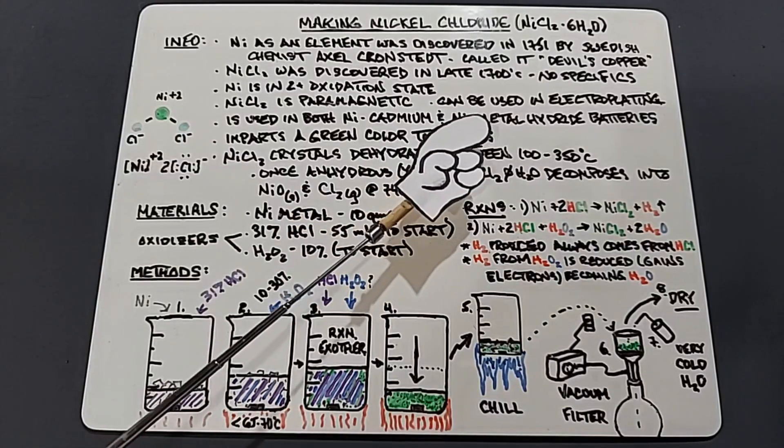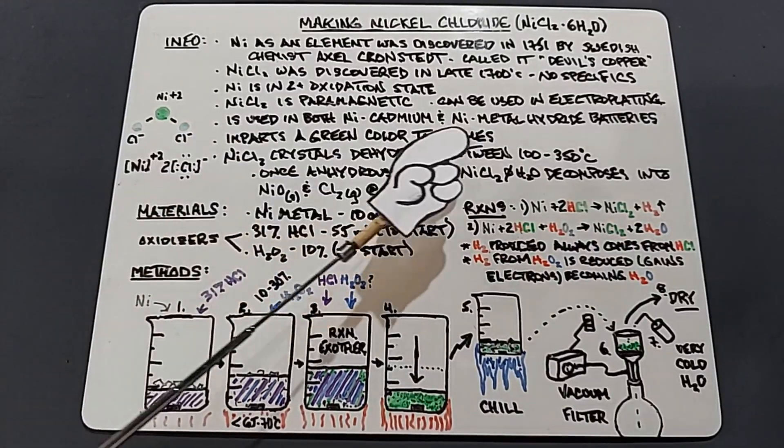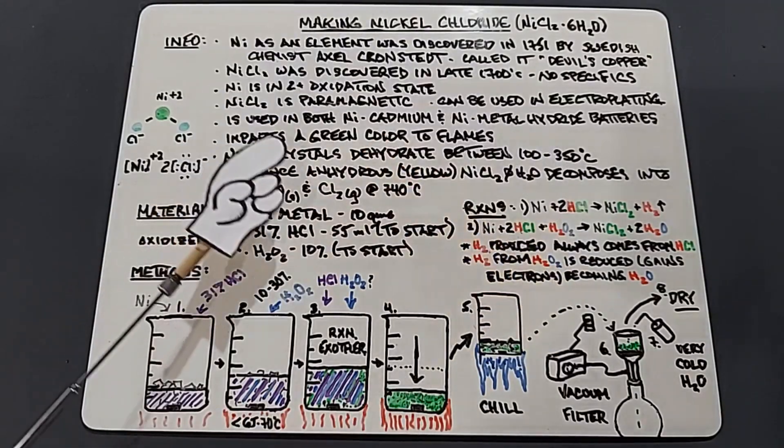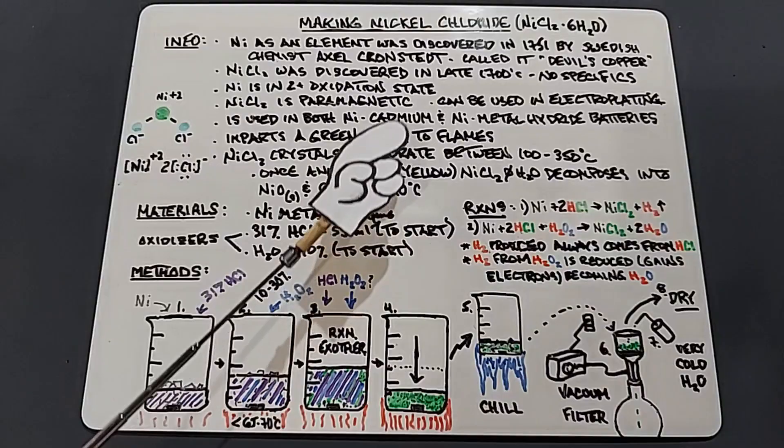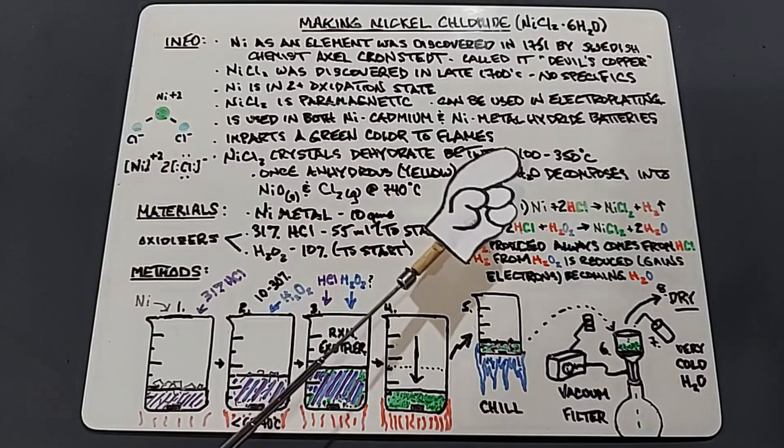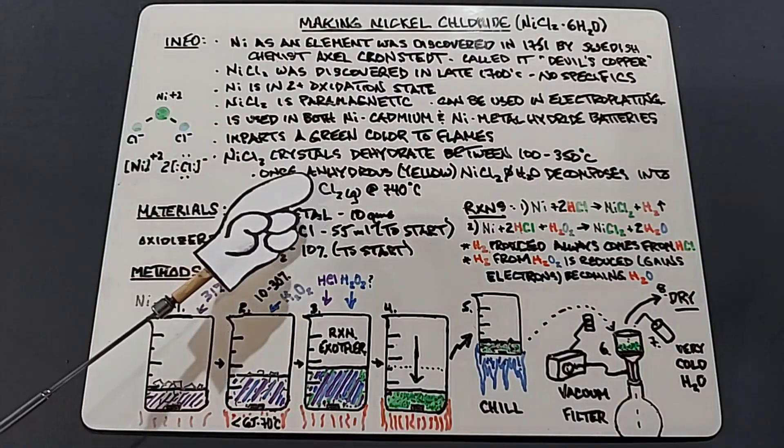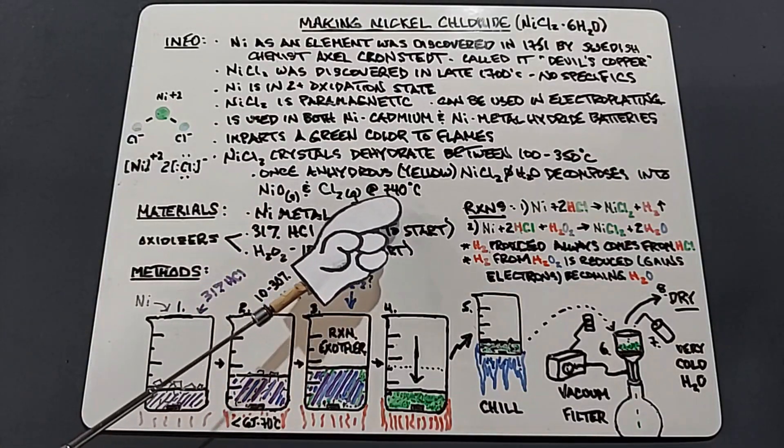NiCl₂ crystals dehydrate between 100 and 350 degrees Celsius, so it doesn't take that much heat actually. Once they're anhydrous, they're a yellow color. And nickel chloride without the water, if it's heated further, decomposes into nickel oxide and chlorine gas, but you need to reach temperatures of about 740 degrees Celsius to do that.